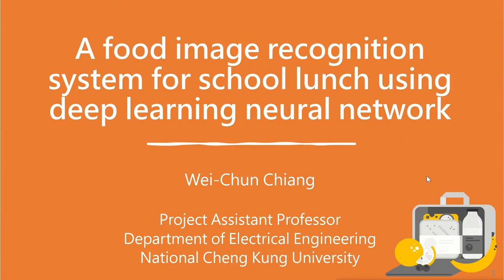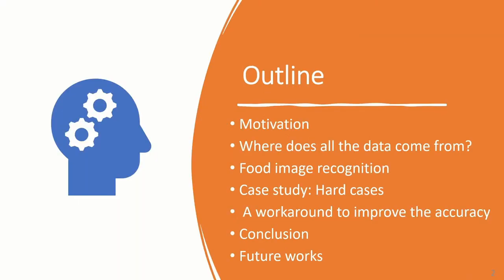Hi everyone, I am Wei-Chun Chiang from the Department of Electrical Engineering of National Shenggong University. Today I am very glad to share our team's research results. The topic is a food image recognition system for school lunch using deep learning neural network. First, we will introduce our research motivation and explain how to obtain analysis data, then introduce the deep learning algorithm used in this research.